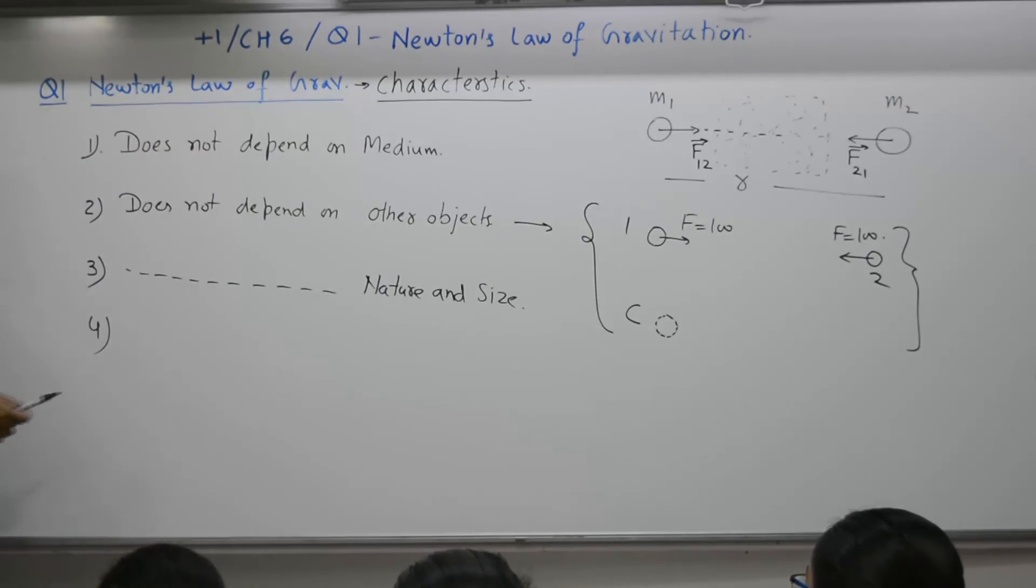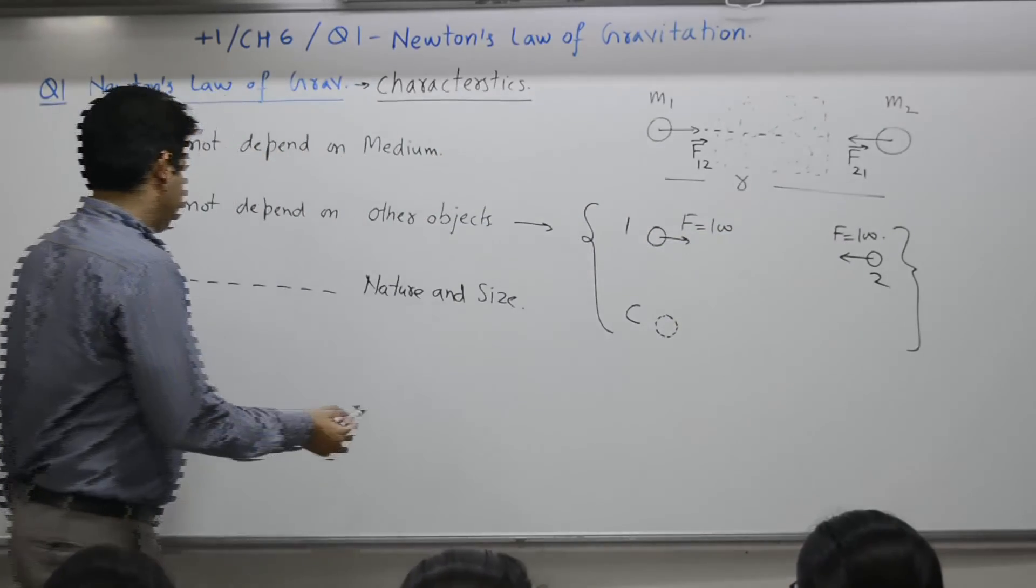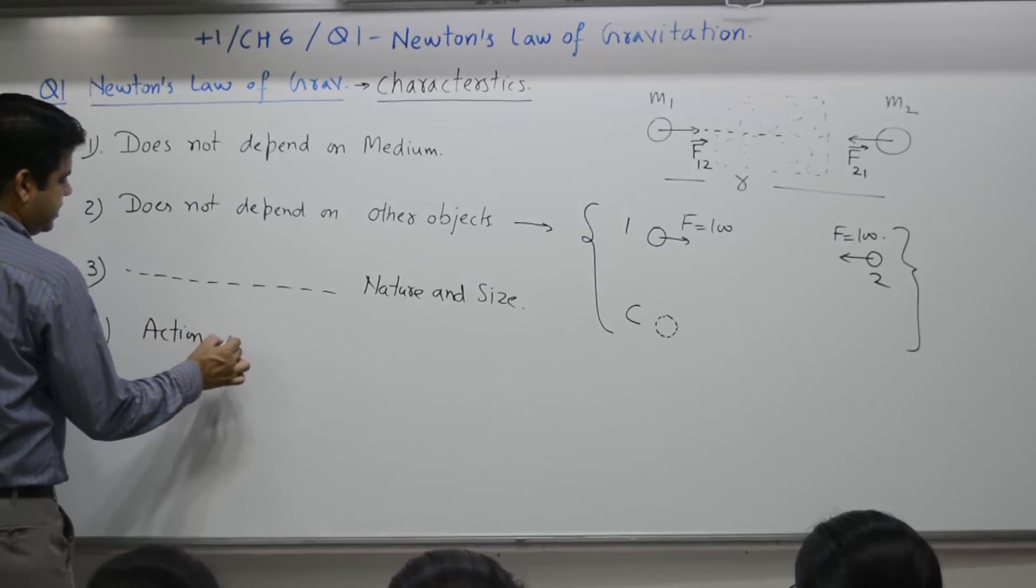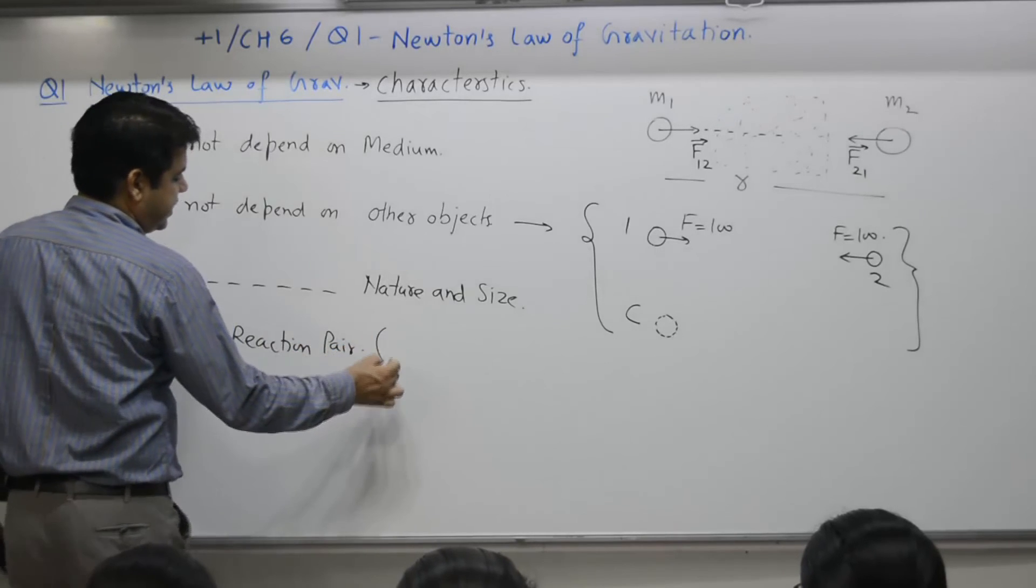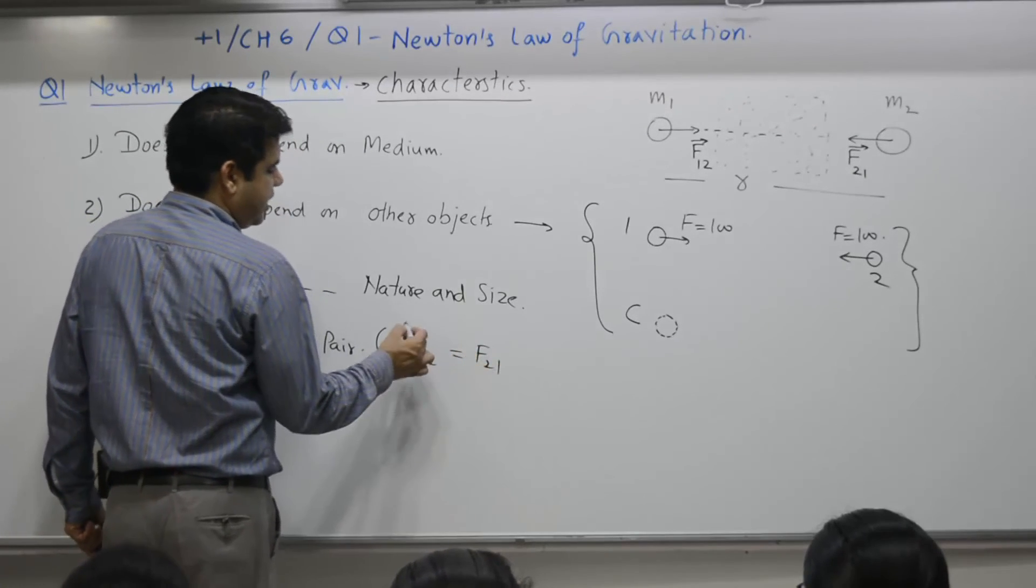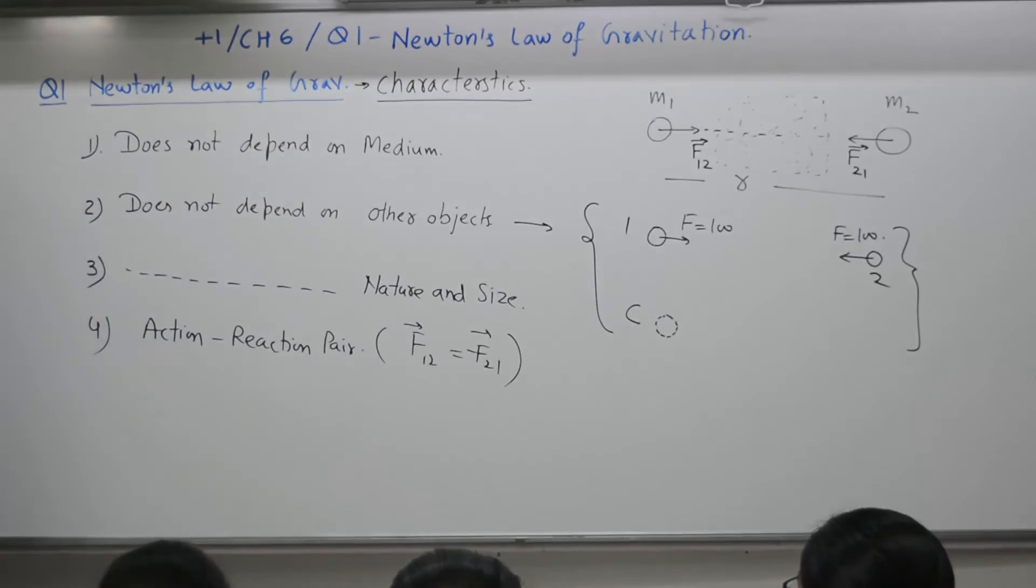For action and reaction pair that we have already written F12 and F21. Action-reaction pair: magnitude of F12 is equal to magnitude of F21. What about direction? Magnitudes are equal, direction is opposite.